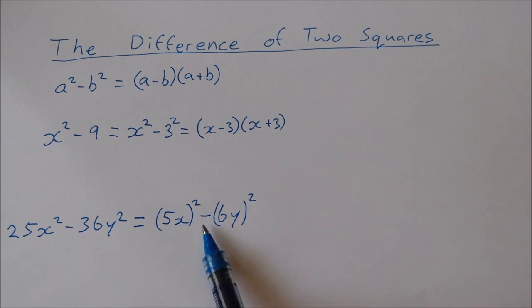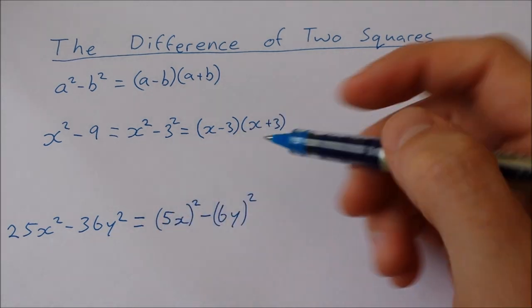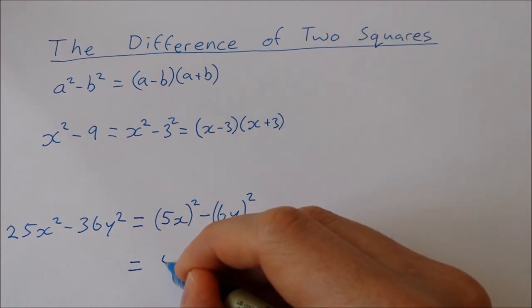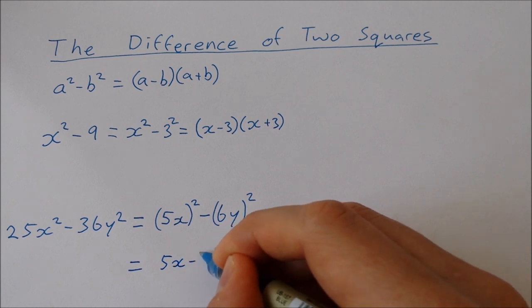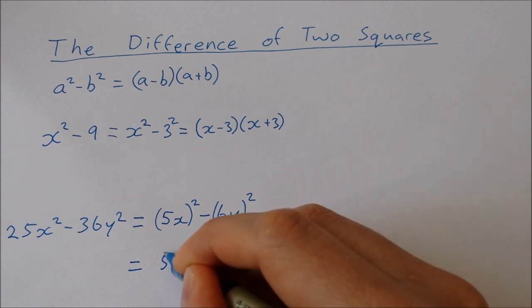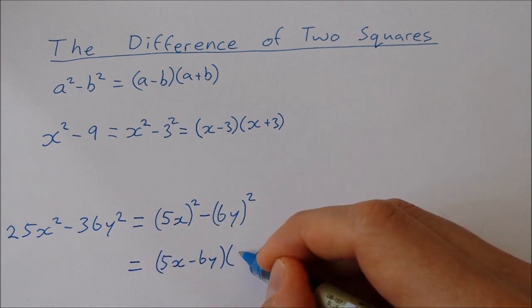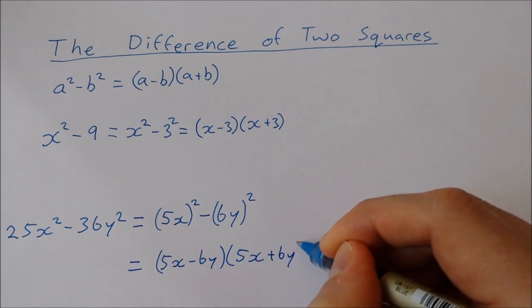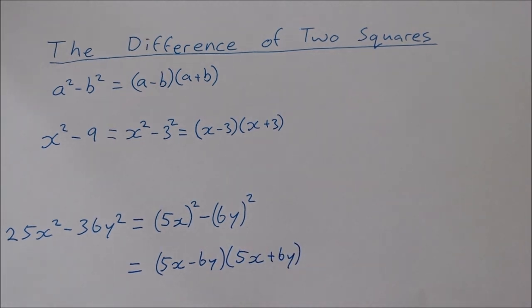I have 5x to be squared minus 6y to be squared. So using my formula from before, I can write this as 5x minus 6y times 5x plus 6y. And that's the difference of two squares.